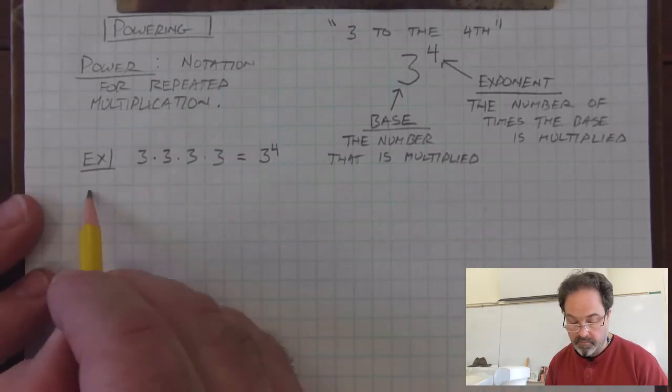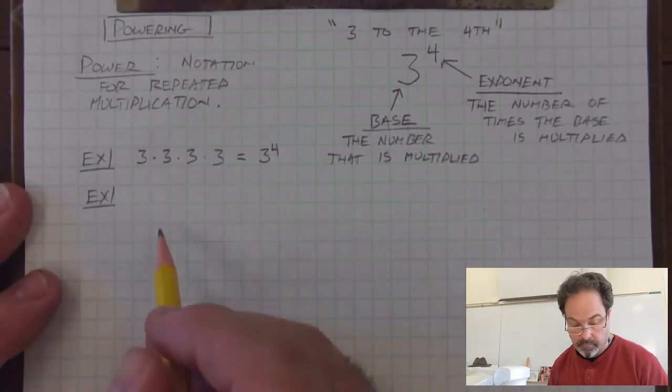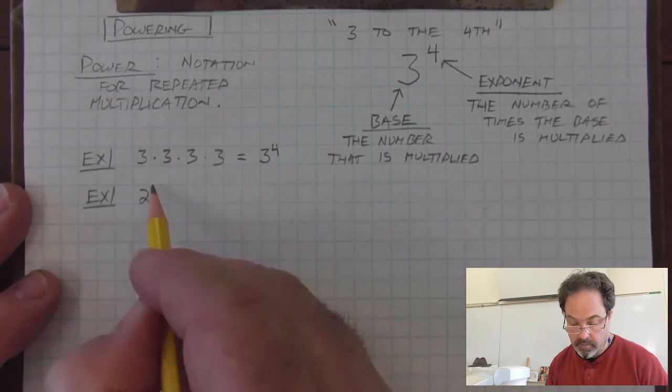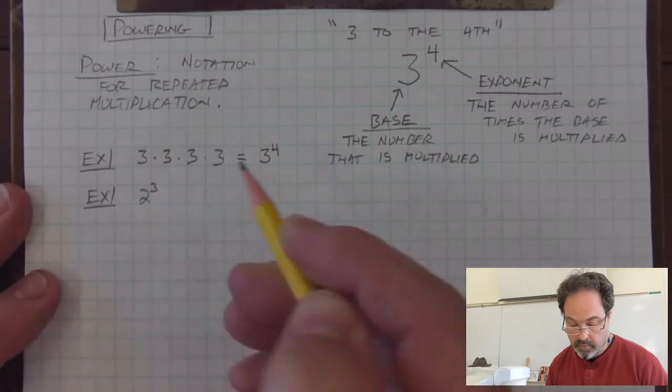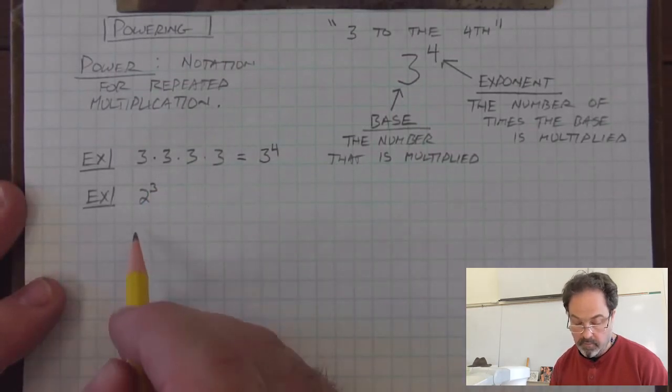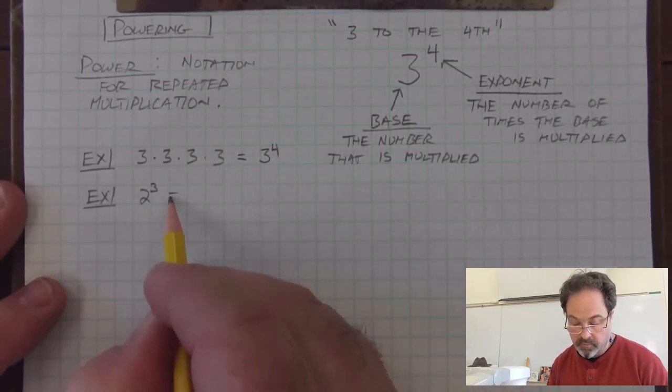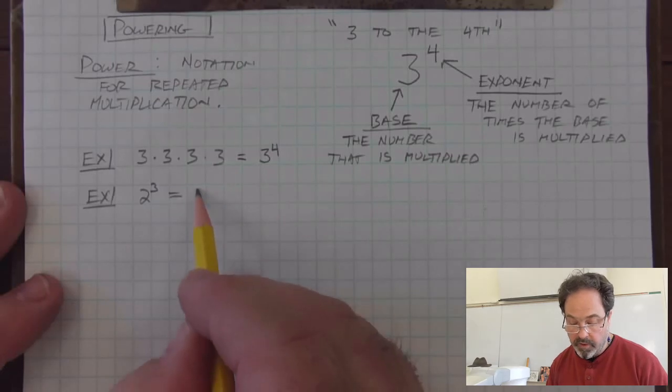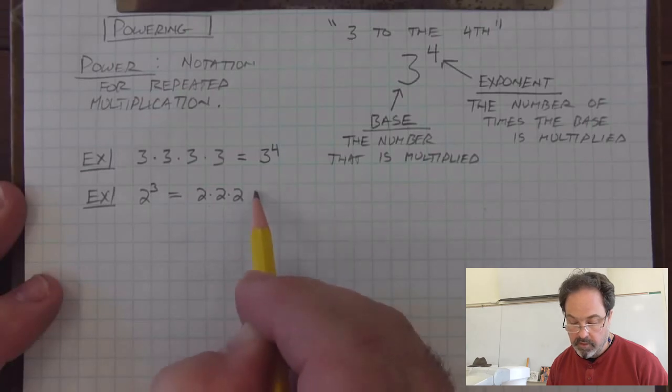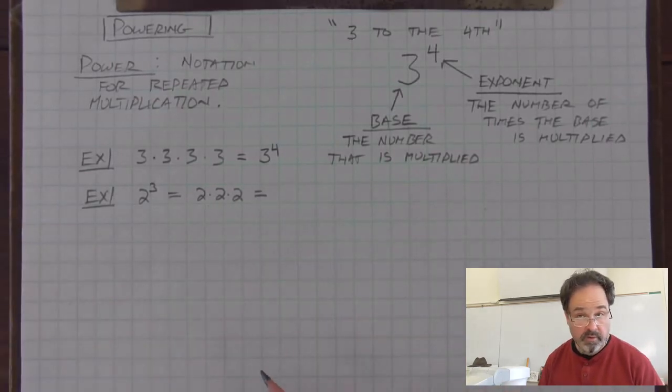Another example. 2 to the 3rd is equal to multiplying 2 by itself repeatedly 3 times.